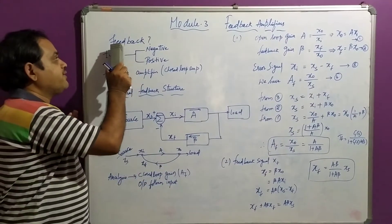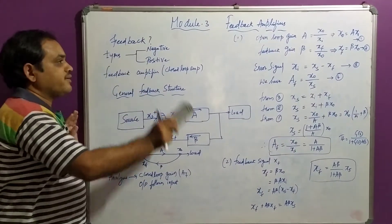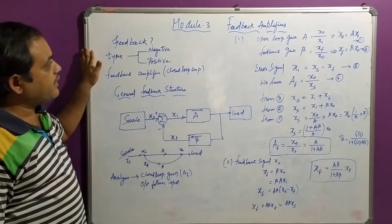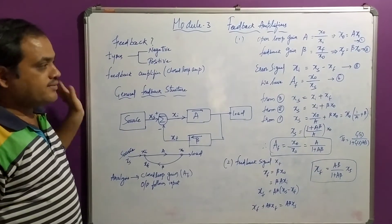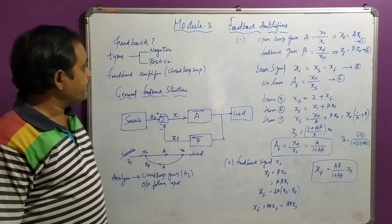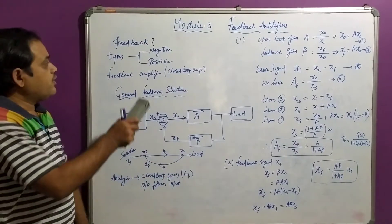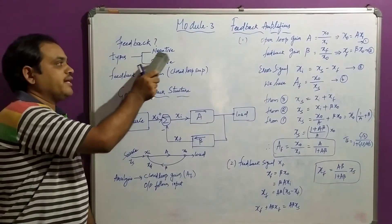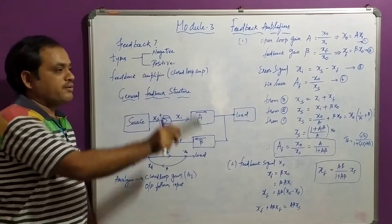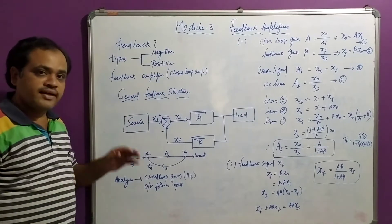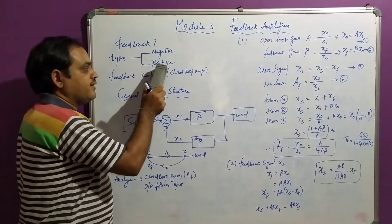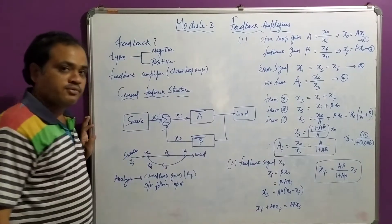Feedback is going to increase the efficiency of the circuit. Feedback is a must in any kind of circuit. The types of feedback are negative feedback and positive feedback. Negative feedback is also called degenerative feedback, and positive feedback is also called regenerative feedback.